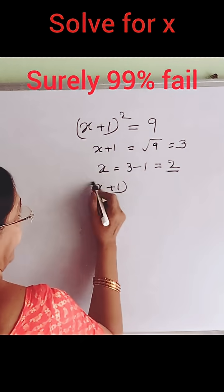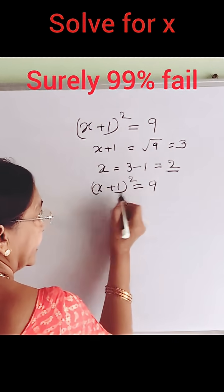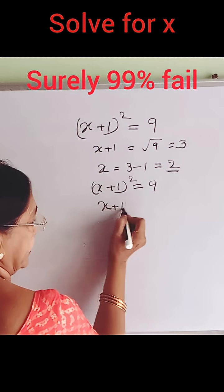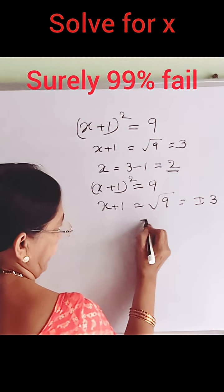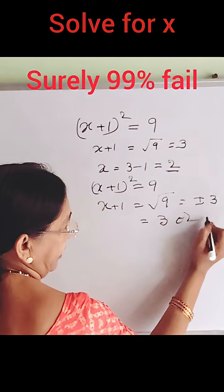So x plus 1 whole square is equal to 9. Taking square roots on both sides, this is square root of 9. Is that plus or minus 3? This value is 3 or minus 3.